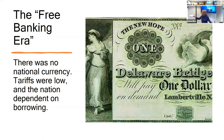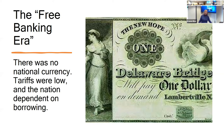This is money issued by the Delaware Bridge Company, with a nice lady and so forth — just one example of the kind of thing. This is from Lambertville, North Carolina, so they had to have a nice, well-dressed lady on it.